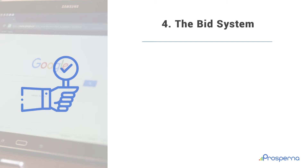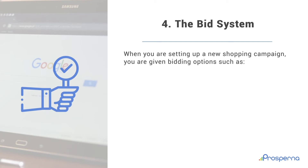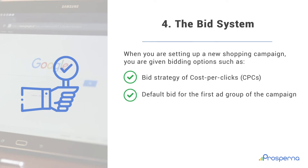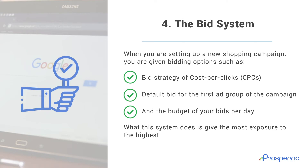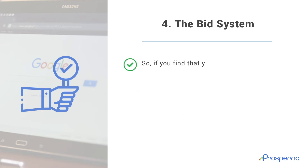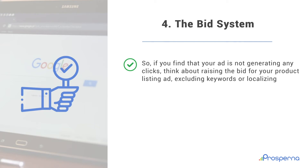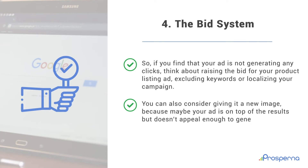Number 4: The Bid System. When you are setting up a new shopping campaign, you are given bidding options such as bid strategy of cost per clicks, default bid for the first ad group of the campaign, and the budget of your bids per day. This system gives the most exposure to the highest bid for a product listing ad. So if you find that your ad is not generating any clicks, think about raising the bid for your product listing ad, excluding keywords, or localizing your campaign. You can also consider giving it a new image, because maybe your ad is on top of the results but doesn't appeal enough to generate clicks.